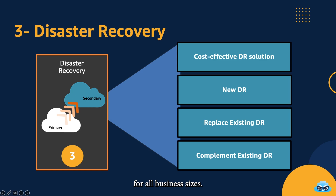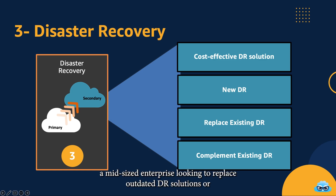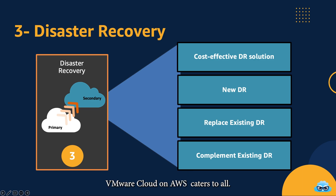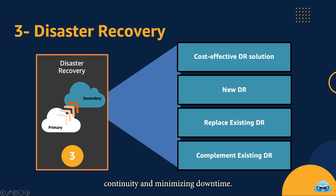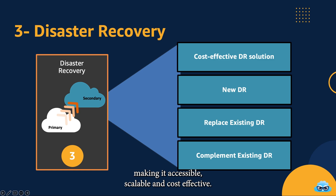For All Business Sizes — whether you're a small business without an existing DR plan, a mid-sized enterprise looking to replace outdated DR solutions, or a large corporation wanting to complement existing DR strategies, VMware Cloud on AWS caters to all. With this solution, your critical workloads and data are safeguarded in the cloud. In the event of a disaster, you can seamlessly failover to the cloud, ensuring business continuity and minimizing downtime. VMware Cloud on AWS redefines the DR landscape, making it accessible, scalable, and cost-effective. It's your safety net in times of crisis.